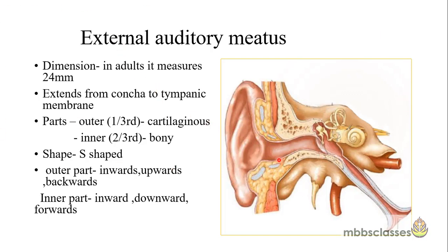Because the tympanic membrane is not placed vertically but in a slightly oblique position, the anterior wall and floor of the external auditory canal are longer. The diameter of the canal is not equal throughout — there are two constrictions. The first constriction is at the junction of the cartilage and bone. The second constriction is the isthmus, situated 5 mm away from the recess, where the bony canal dips down.